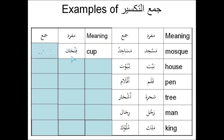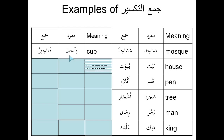Cup: Finjanun, plural Fanajinu. Again, we see a single Dhamma at the end, indicating that the plural of cups is Mamnu' min as-Sarf. If we don't see that Dhamma, that means the word is Mun-Sarf. So Finjan is Mun-Sarf — it can be Finjanun, Finjanan, or Finjanin.